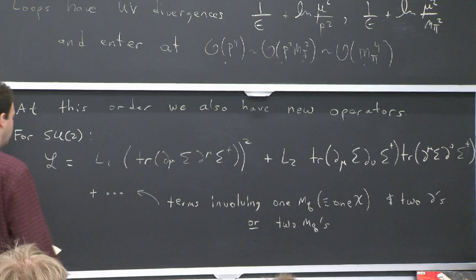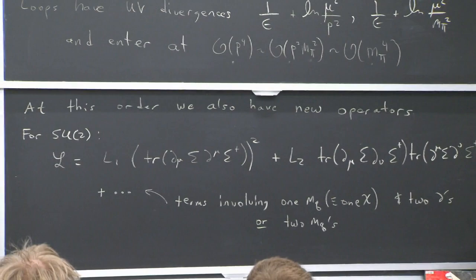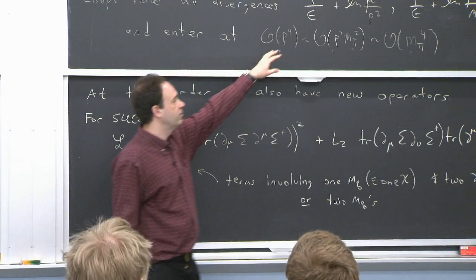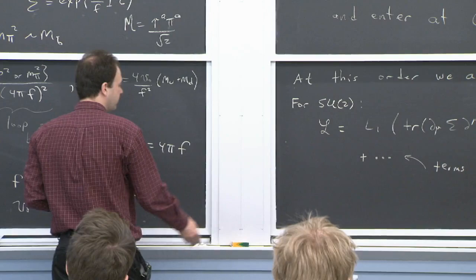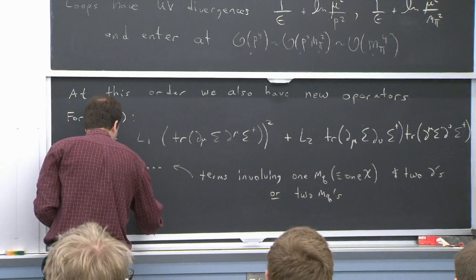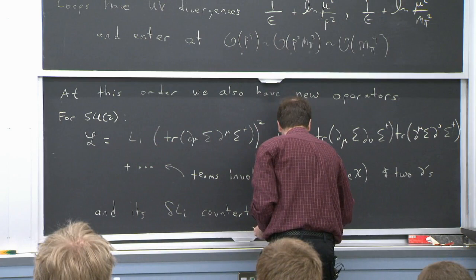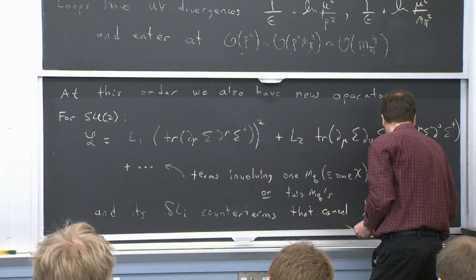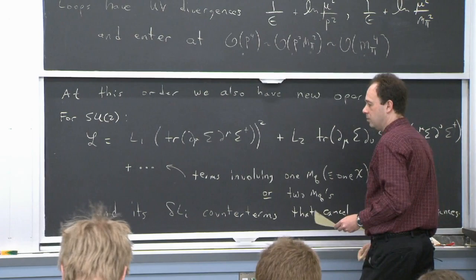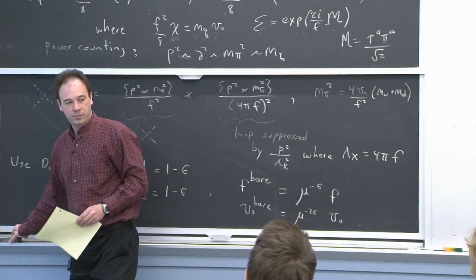The coefficients of this higher order Lagrangian are what we need to cancel off the divergences. The counterterms that renormalize the loop graphs come from this Lagrangian. The theory is renormalizable in an EFT sense, order by order in its power counting expansion. When you go to order p to the fourth, you have to consistently include everything at order p to the fourth — both loops and new local Lagrangian interactions.